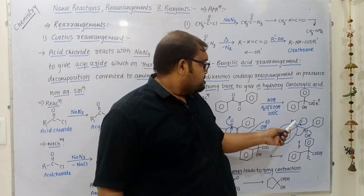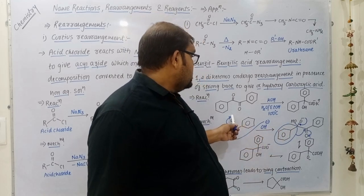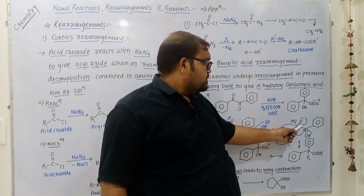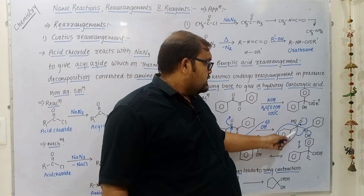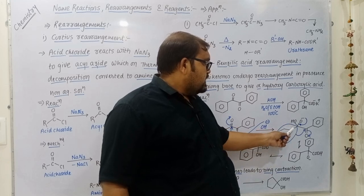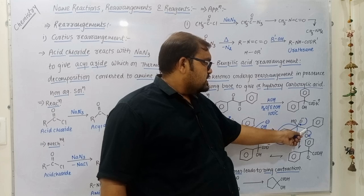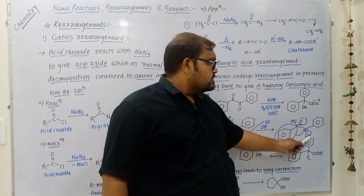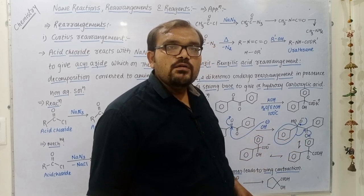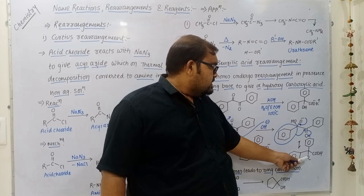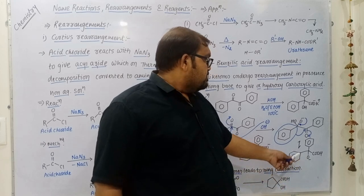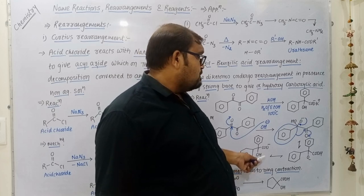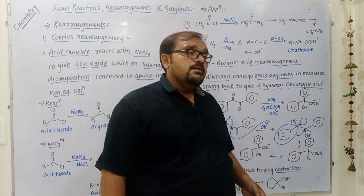In the next step, the negatively charged oxygen: this negative charge shifts between carbon and oxygen forming a double bond, and the phenyl group with its bonding electrons shifts towards the adjacent carbonyl carbon. The pi bonding electrons of that carbon again shift over oxygen as a negative charge, giving an intermediate product.